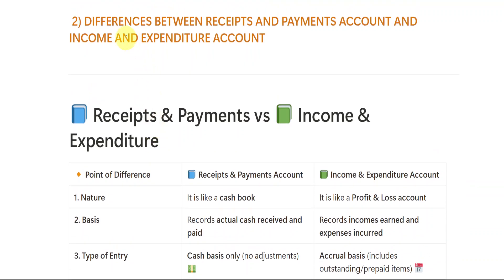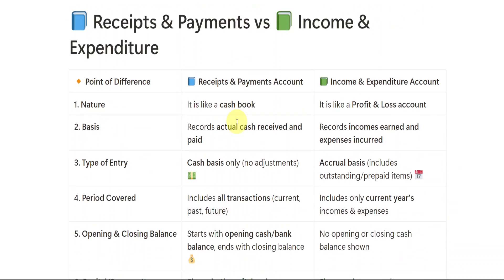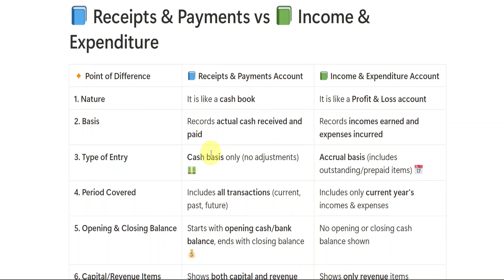The second important question is: the difference between Receipts and Payments Account and Income and Expenditure Account. In terms of nature, the Receipts and Payments Account is like a cash book, whereas the Income and Expenditure Account is like a Profit and Loss Account.